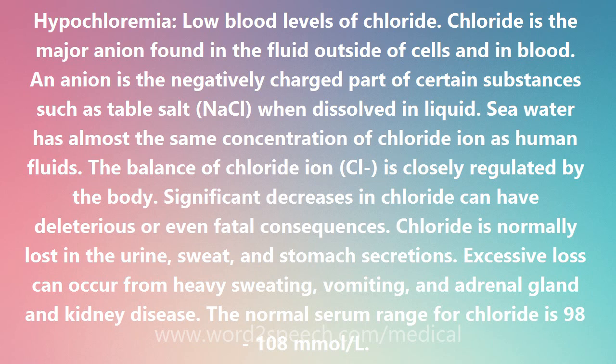The balance of chloride ion (Cl⁻) is closely regulated by the body. Significant decreases in chloride can have deleterious or even fatal consequences. Chloride is normally lost in the urine, sweat, and stomach secretions. Excessive loss can occur from heavy sweating, vomiting, and adrenal gland and kidney disease. The normal serum range for chloride is 98 to 108 mmol/L.